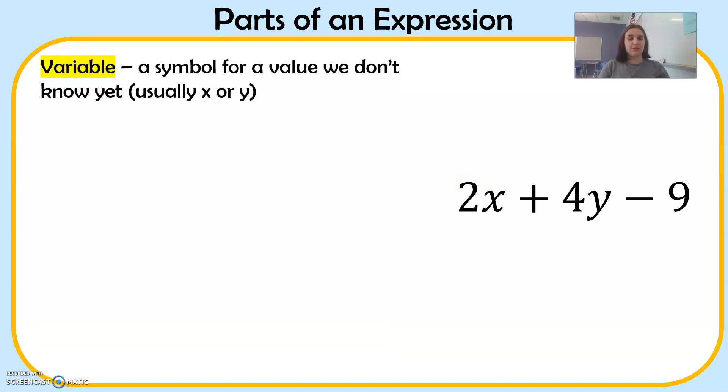First are variables. Variables are symbols for a value that we don't know yet. Usually we see the letter x or y, but it can be any symbol or letter. X and y are pretty common, though. So in this expression, x and y are the variables.